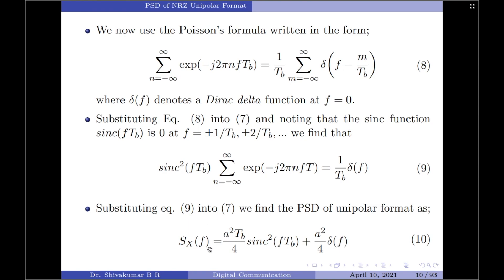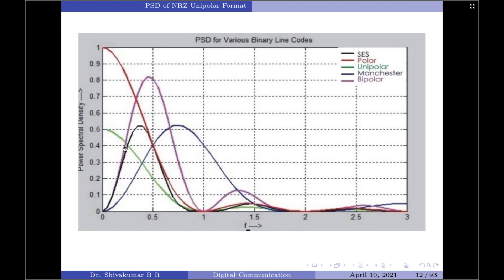The final expression for the power spectral density of the NRZ unipolar format is: Sx(f) = (A²Tb/4) · sinc²(f·Tb) + (A²/4) · δ(f). Looking at the normalized PSD plot comparing multiple formats, the NRZ unipolar result is shown by the green graph. This concludes the derivation. If you like this video, please press the like button and subscribe for more digital communication videos.